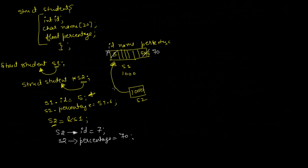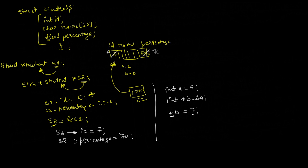So accessing memory locations is different for structure pointers versus regular variables. In case of regular variables, if you have int a equal to 5 and int star b equal to address of a, then star b equal to 7 uses the dereference operator. But in case of structures, we use the arrow notation to access the memory location pointed to by the structure pointer.